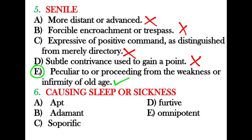Next: what is the word for 'causing sleep or sickness'? Apt means appropriate, adamant means stubborn, furtive means secret, and omnipotent means having power over everything. The correct answer is 'soporific' — soporific is anything that causes sleep or drowsiness.